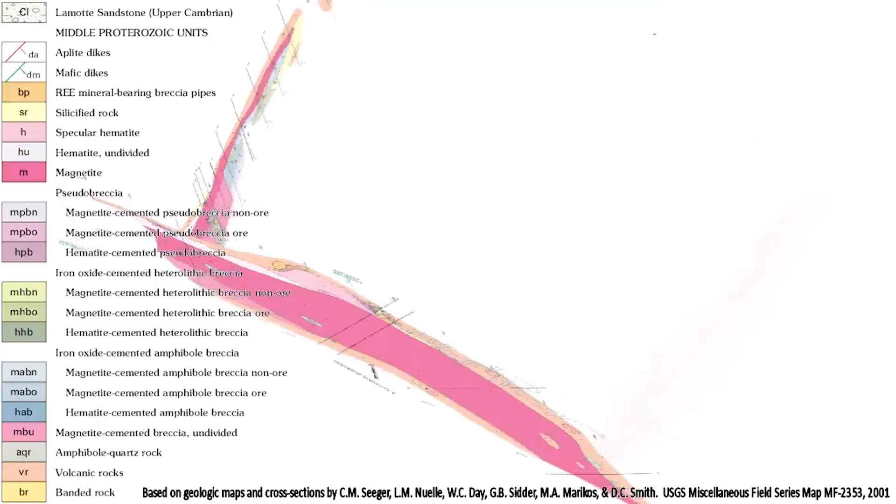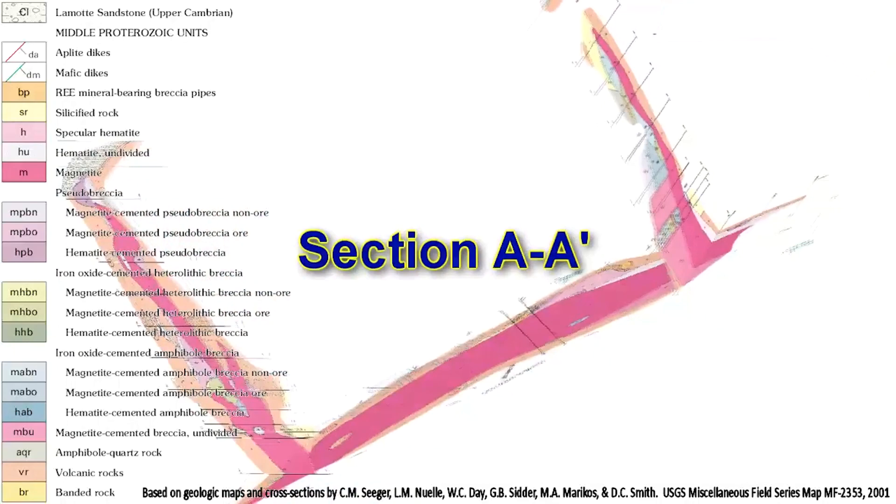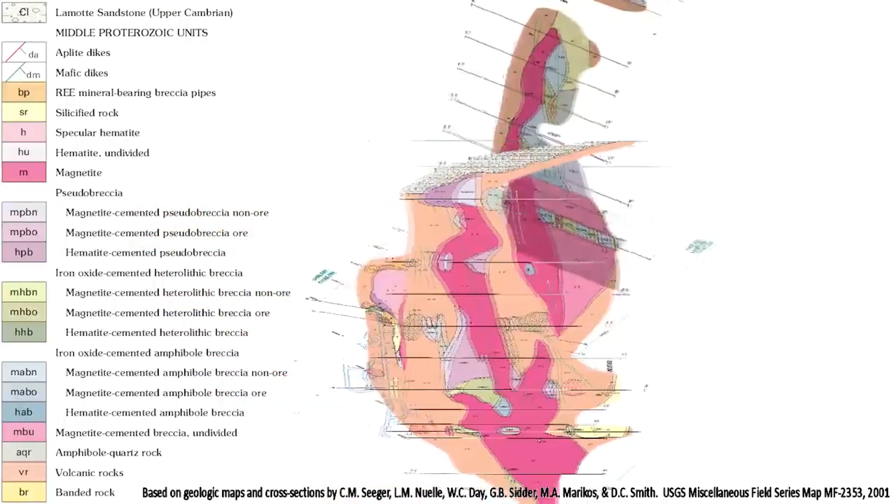Subsequent production in a joint venture between St. Joe Lead and Bethlehem Steel began in 1964. Operation and ownership changed hands a number of times until mining operations ended in 2001. Ownership of the inactive mine changed hands from 2002 until 2019.